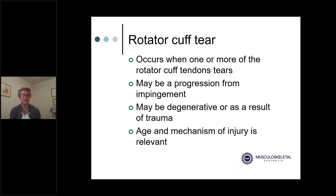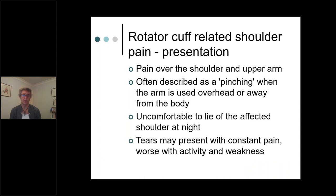A rotator cuff tear can be a progression of impingement or tendinopathy, involving one or more tendons tearing. It can be degenerative or result from trauma, and the age of the person is significant. People present with pain over the shoulder and upper arm, often described as a pinching when using the arm away from the body or overhead. Other features include pain lying on that side at night, constant pain if inflamed, and pain with particular movements. Large traumatic tears may result in more constant pain and notable weakness.